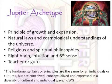Here's a quote from Jeffrey Wolf Green, the creator of evolutionary astrology: 'The fundamental laws or principles of the universe are the same for all individuals and cultures, but they are conceived, conceptualized, and expressed in a diversity of cultural and individual ways.' Even though natural spiritual laws and principles are timeless and universal — the same for all species and all forms of consciousness — we interpret them in all kinds of different ways as societies, countries, and individuals.